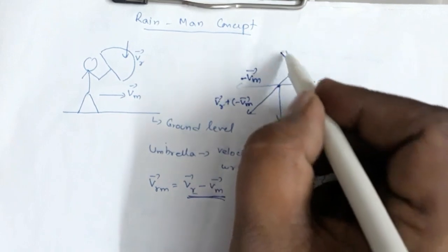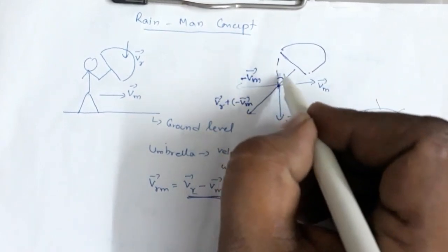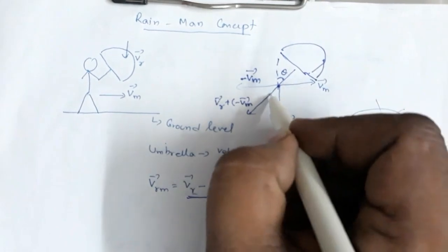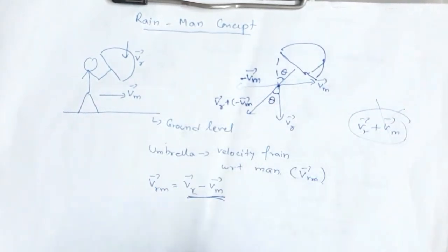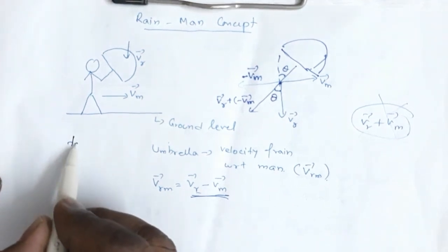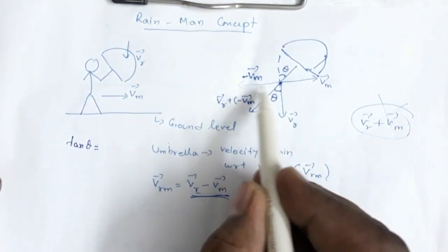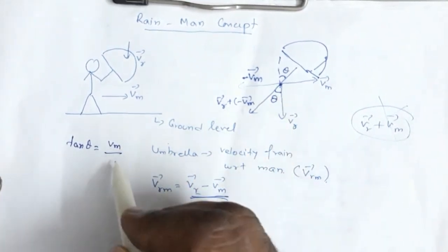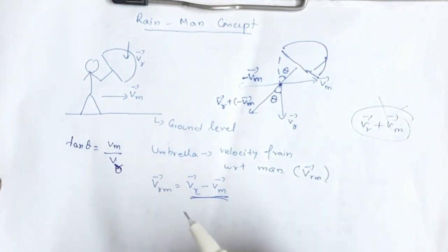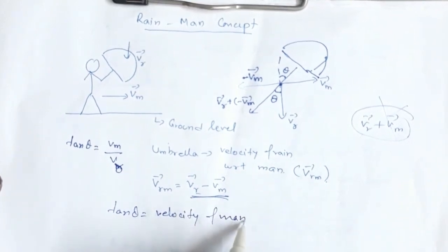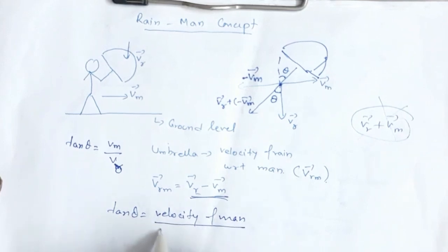The umbrella will be in this direction, making angle θ with the vertical. If θ is the angle, then tan θ equals the horizontal component divided by the vertical component. The horizontal side has length Vm and the vertical side has length Vr. Therefore, tan θ = Vm / Vr.